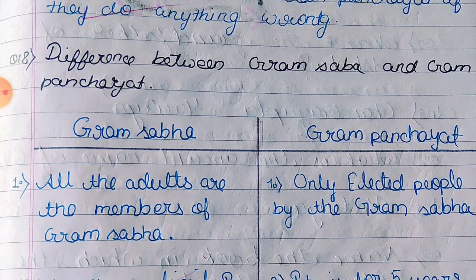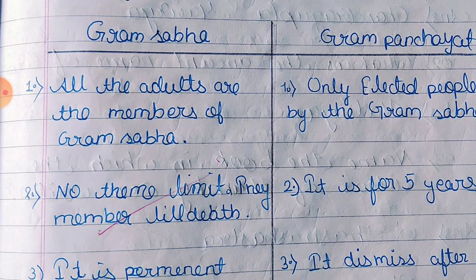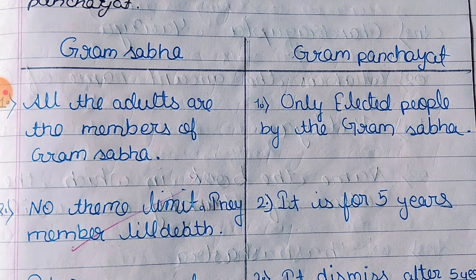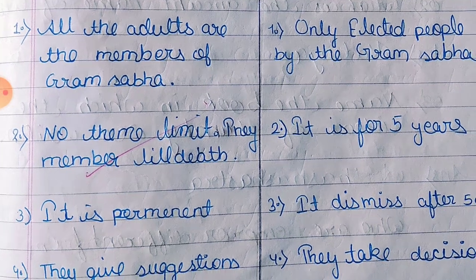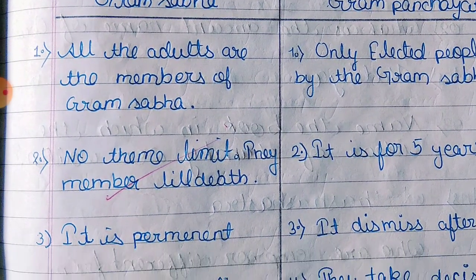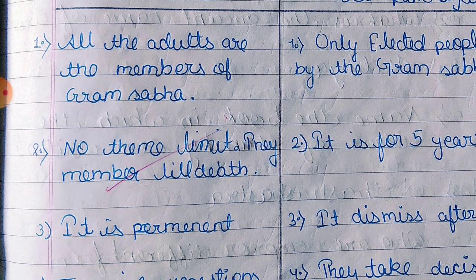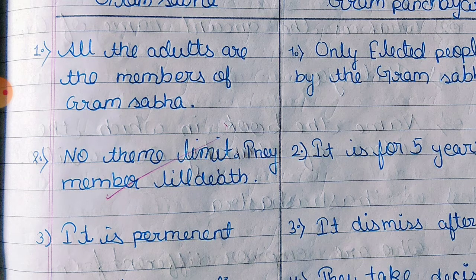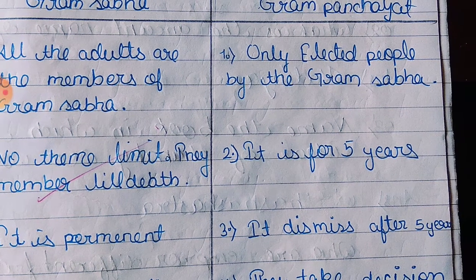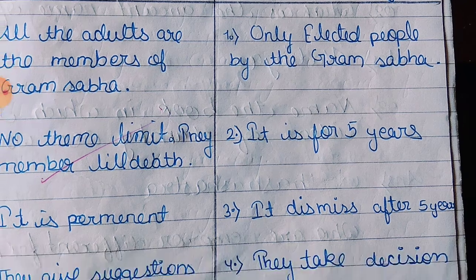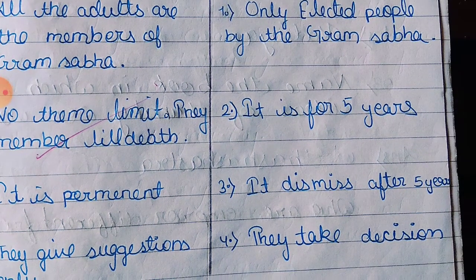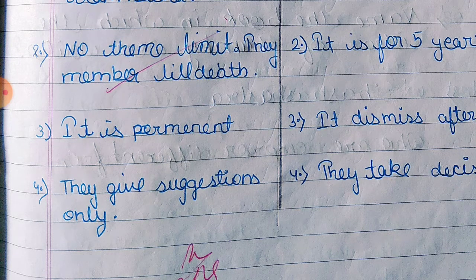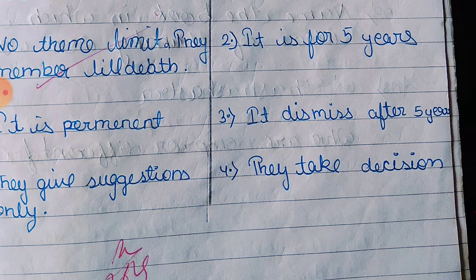Difference between Gram Sabha and Gram Panchayat: Point 1 – Gram Sabha: All adults are members of Gram Sabha. Gram Panchayat: Only those elected by Gram Sabha are members. Point 2 – Gram Sabha: No term limit; members can serve till death. Gram Panchayat: It is for 5 years. Point 3 – Gram Sabha: It is permanent. Gram Panchayat: It dissolves after 5 years. Point 4 – Gram Sabha: They give suggestions only. Gram Panchayat: They make decisions.